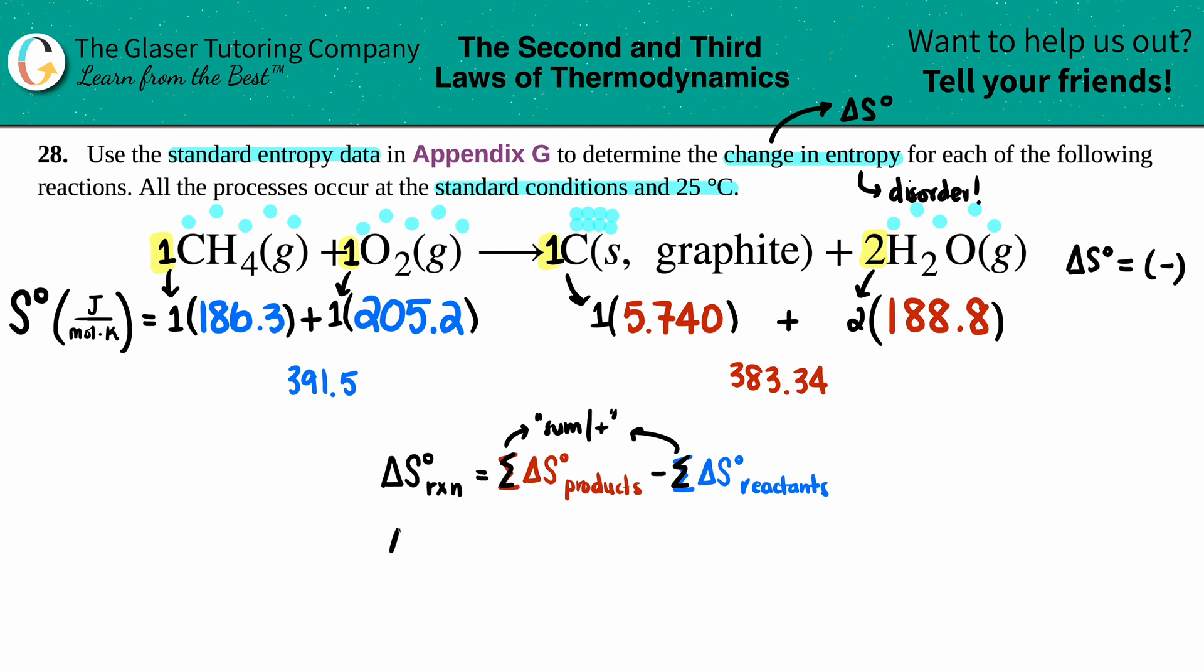Products minus reactants. Let's plug it in. Delta S for the whole entire reaction equals 383.34. I'm going to subtract by the 391. And I do see that we have a negative value going on here. So we guessed correctly. Good job.